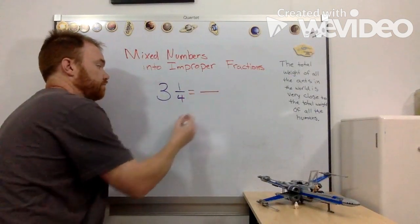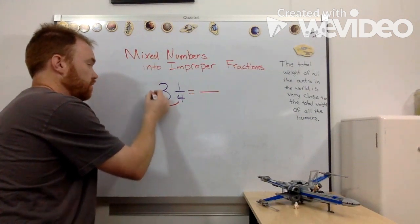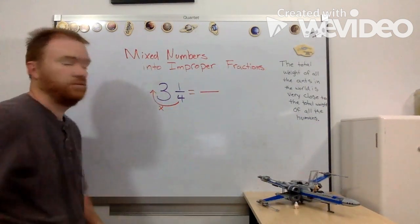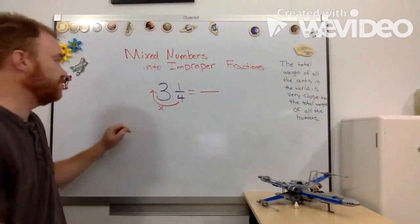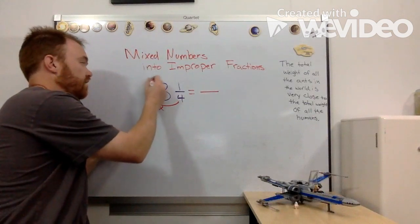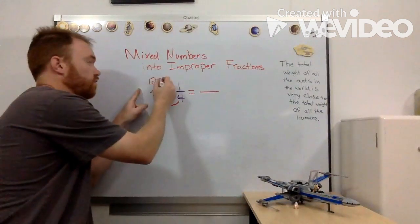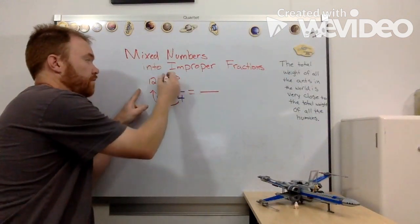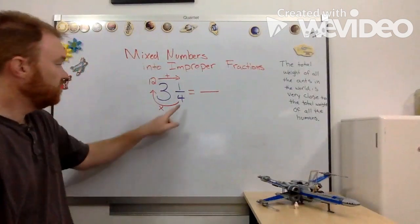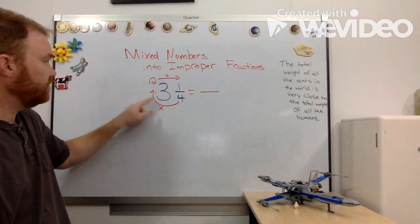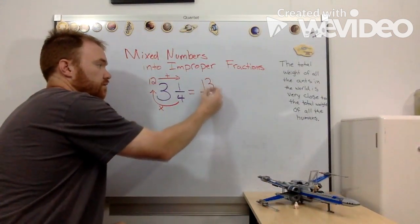To do that I'm going to take my denominator and multiply by the whole number. So in this case I'm going to do four times three and I'll get 12. Then I'm going to take that 12 and I'm going to add the numerator. So I have four times three is 12 plus one gives me 13.